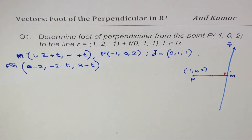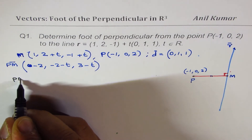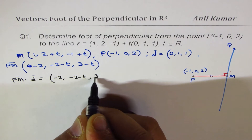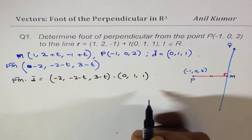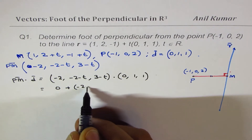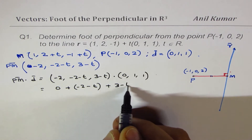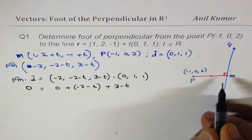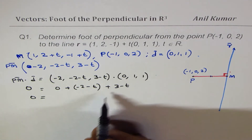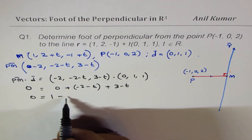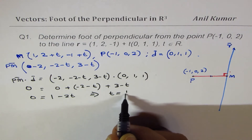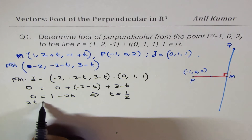We calculate the dot product PM · d: that gives 0 times the first component, plus (minus 2 minus t) times 1, plus (3 minus t) times 1, all equal to zero. So we get minus 2 minus t plus 3 minus t equals 0, which simplifies to 1 minus 2t equals 0. Therefore t equals 1/2.